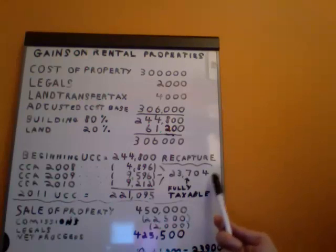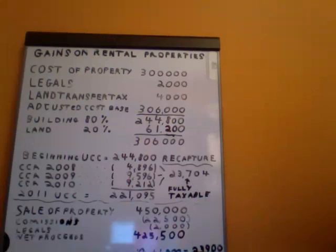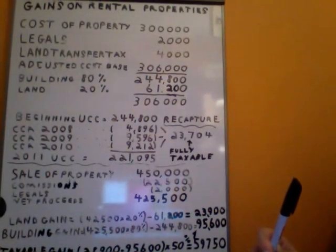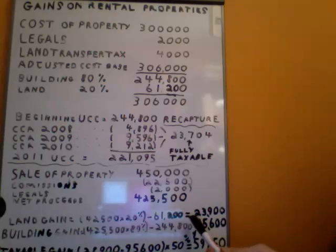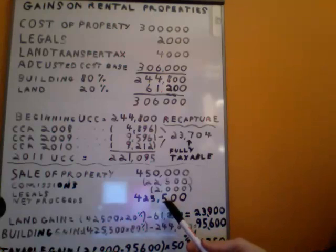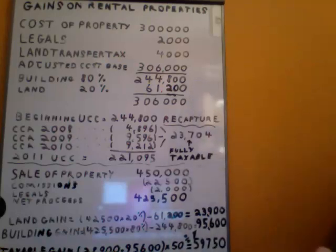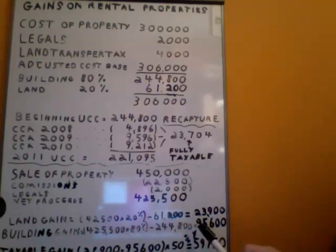He deducted the CCA for 2008 to 2010, and he now must take that amount back into income on line 126 of the tax return — $23,704. He also has a capital gain on the land, which works out to $425,500 times 20%, less the ACB for the land of $61,200, giving him a capital gain on this disposition of $23,900.